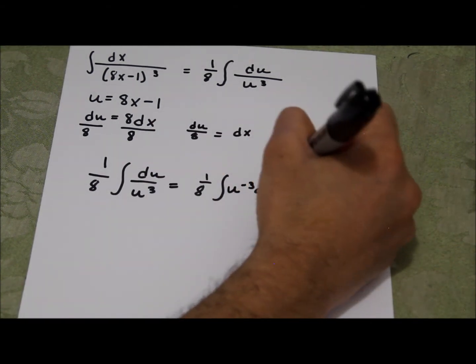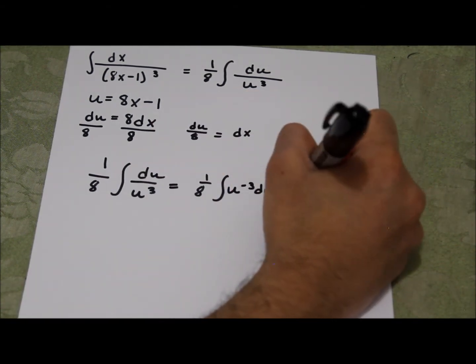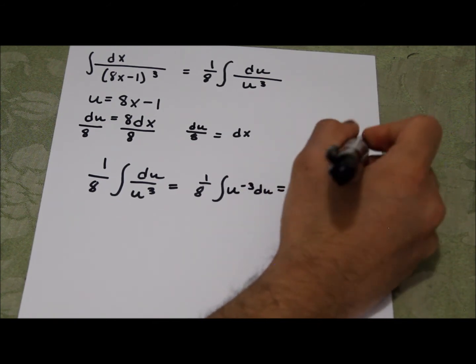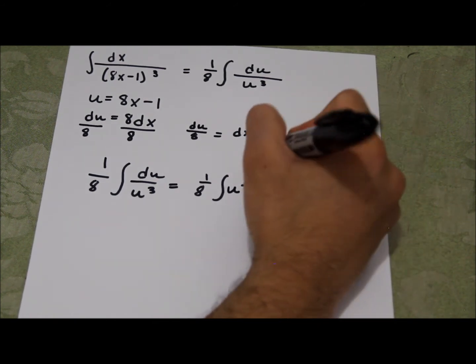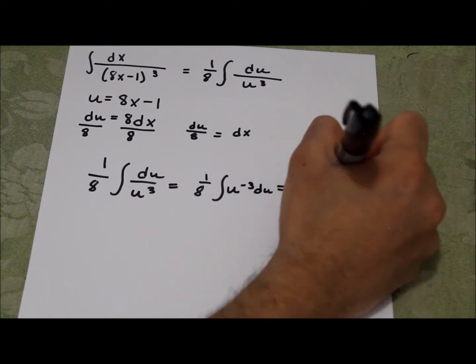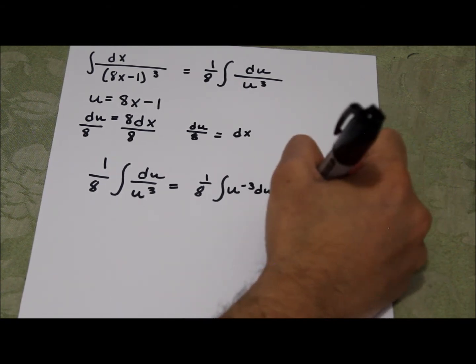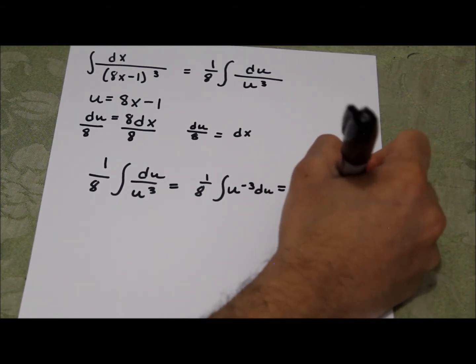And take 1 eighth, which is the constant that just comes over, times u raised to the negative 3 plus 1, so that's negative 2 divided by this. So that's divided by negative 2 plus c.